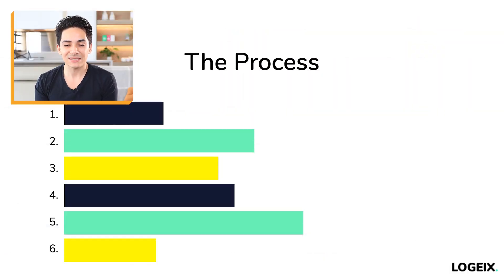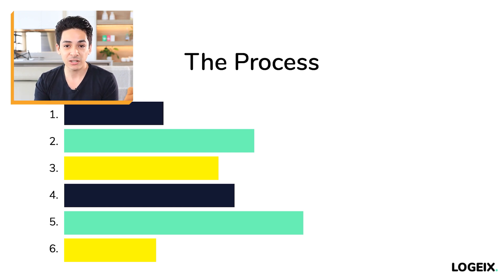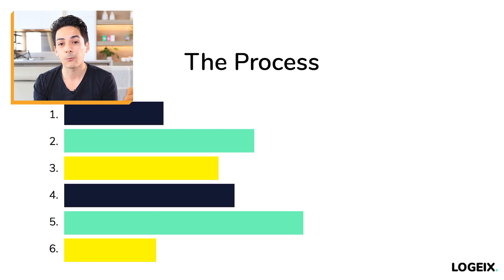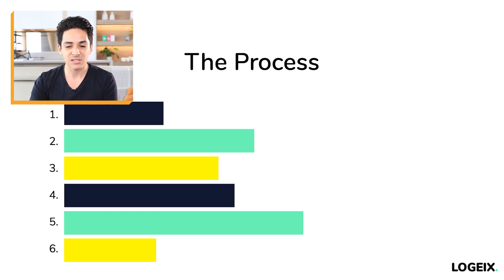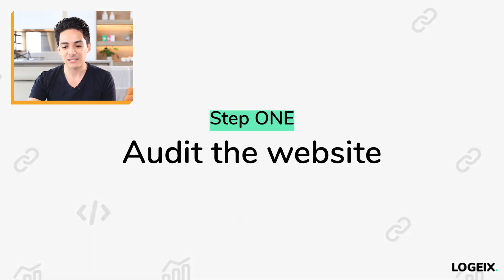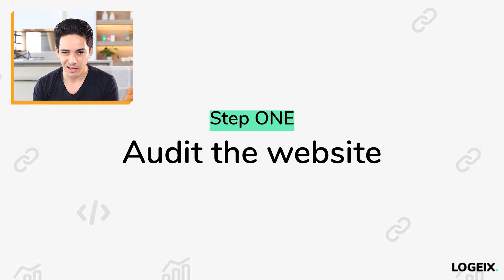Getting into the actual strategy, there are six steps to this process that I'd like to break down in detail in this video, including what tools from the initial toolkit you're going to need. The first step in the process is auditing your website.